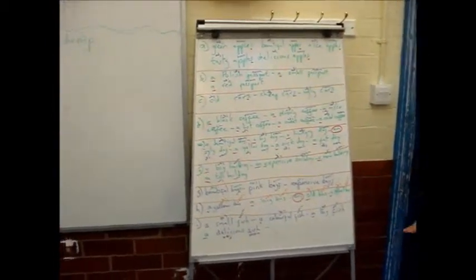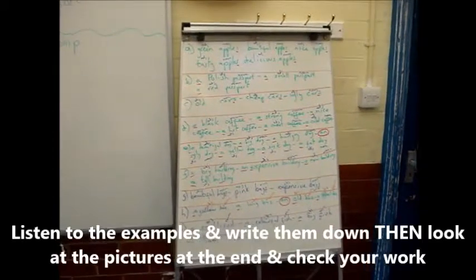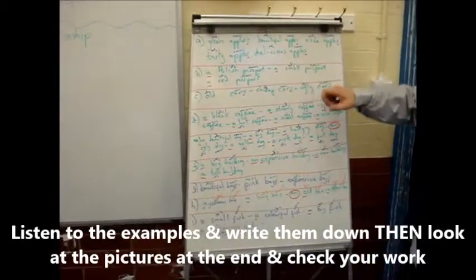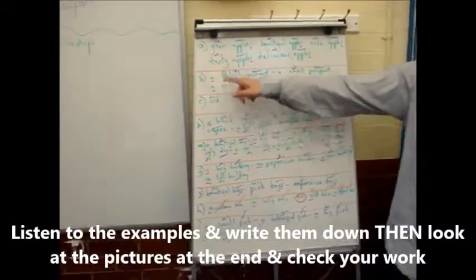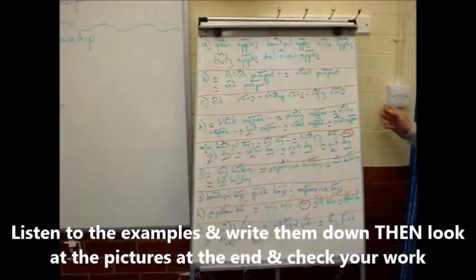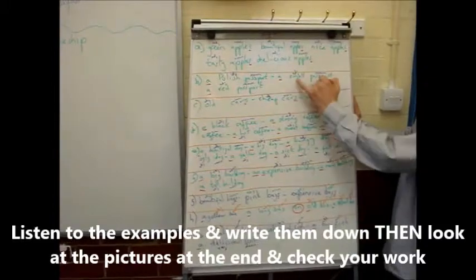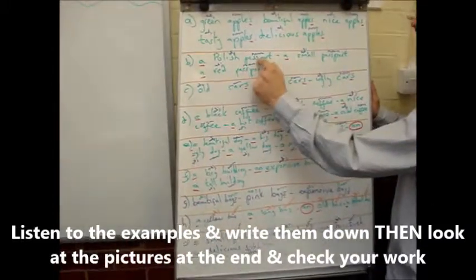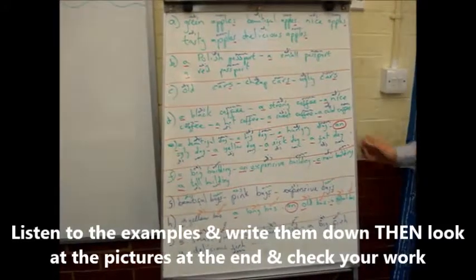So here are all the examples that you wrote. I'll take a photo of this for Facebook. Green apples, beautiful apples. A Polish passport, a small passport. Adjective noun. Adjective noun. This is very important for today.